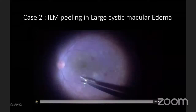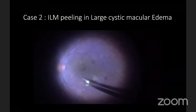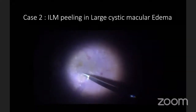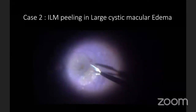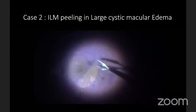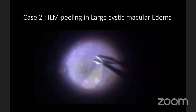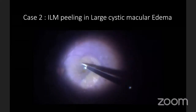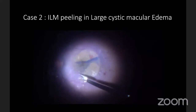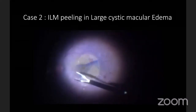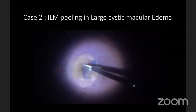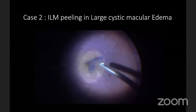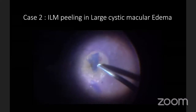If we decide to do ILM peeling along with posterior cortex detachment and the patient has a large cyst, it is better to do a fovea-sparing approach. We create an edge of the ILM, peel a defect all around, then centripetally peel the ILM towards the cyst. This is essential to prevent de-roofing of the cyst and creating a lamellar or full-thickness macular hole. Once the ILM is peeled all around the fovea, if a flap remains long enough, we can trim it to prevent adjustment of floaters.